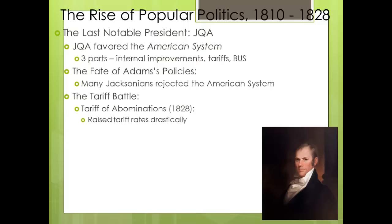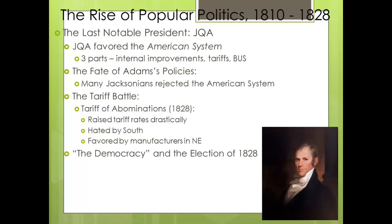In 1828, the Tariff of Abominations raised tariff rates drastically to the highest point in United States history. This was hated by the South because southerners now had to pay more for goods and received no tariff protection on their own goods. However, it was favored by manufacturers in the Northeast and New England.